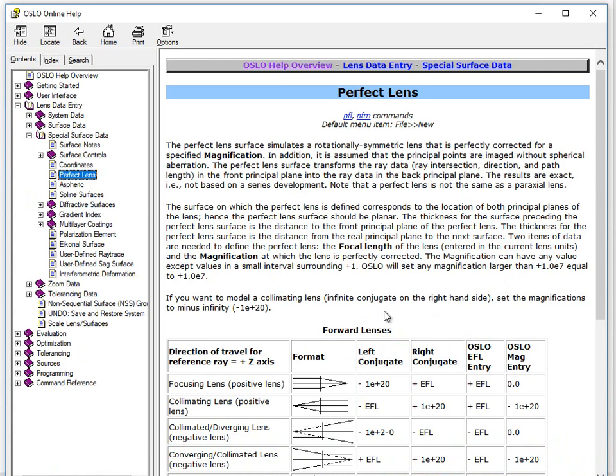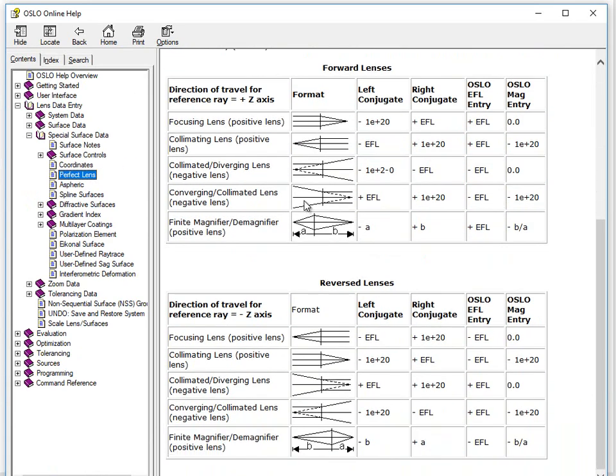Another final point is about perfect lenses. If you want to use a perfect lens for some reason, if you go to the perfect lenses under the contents and special surface data, you can look at that demo file we have as well. This gives you the directions of how to set up a perfect lens for different cases.